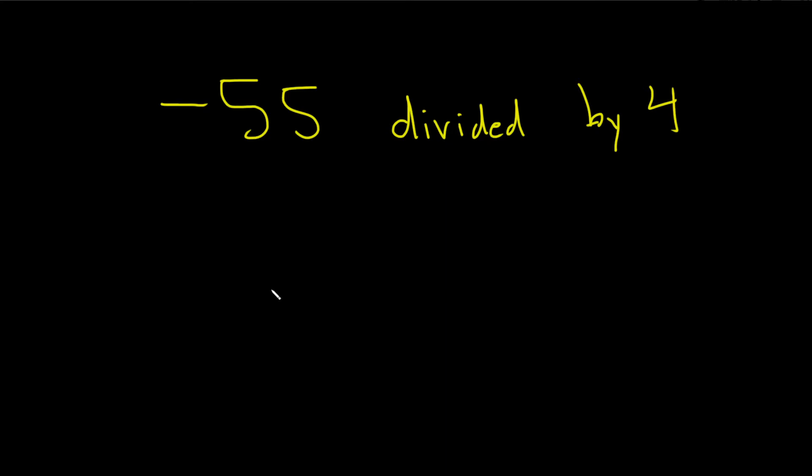Negative 55 divided by 4, we want to use the division algorithm and find the quotient and the remainder.